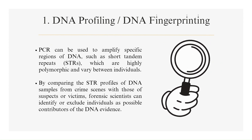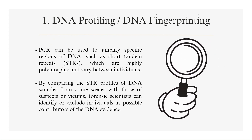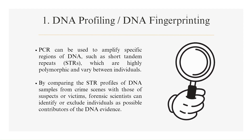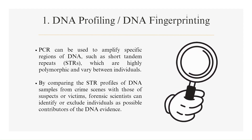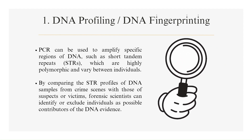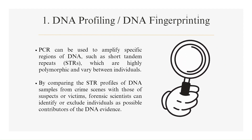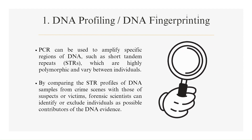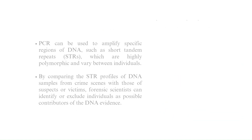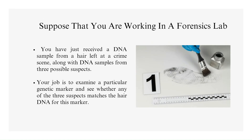DNA profiling, or DNA fingerprinting: PCR can be used to amplify specific regions of DNA, such as short tandem repeats, which are highly polymorphic and vary between individuals. By comparing the STR profiles of DNA samples from crime scenes with those of suspects or victims, forensic scientists can identify or exclude individuals as possible contributors of the DNA evidence. Suppose you are working in a forensics lab. You have just received a DNA sample from a hair left at a crime scene, along with DNA samples from three possible suspects. Your job is to examine a particular genetic marker and see whether any of the three suspects matches the hair DNA for this marker.